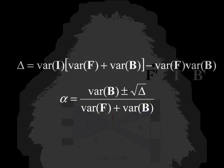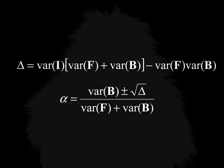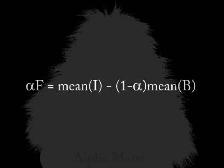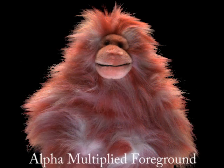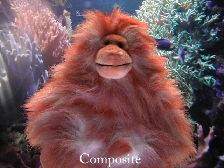We use the variance statistics to solve for alpha. Once we have solved for alpha using variance measurements, we use the mean statistics to solve for the alpha-multiplied foreground. We can then composite our foreground object over a new background.